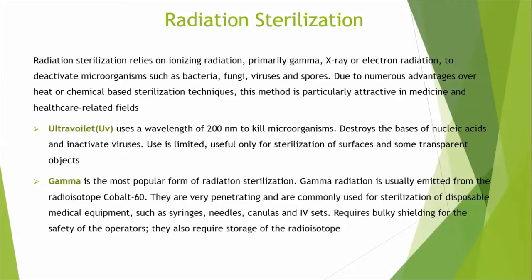Gamma radiation is the most popular form of radiation sterilization. It is usually emitted from the radioisotope cobalt-60. Gamma rays are very penetrating and are commonly used for sterilization of disposable medical equipment such as syringes, needles, cannulas, and IV sets. This method requires protective shielding for the safety of operators and storage of the radioisotope.